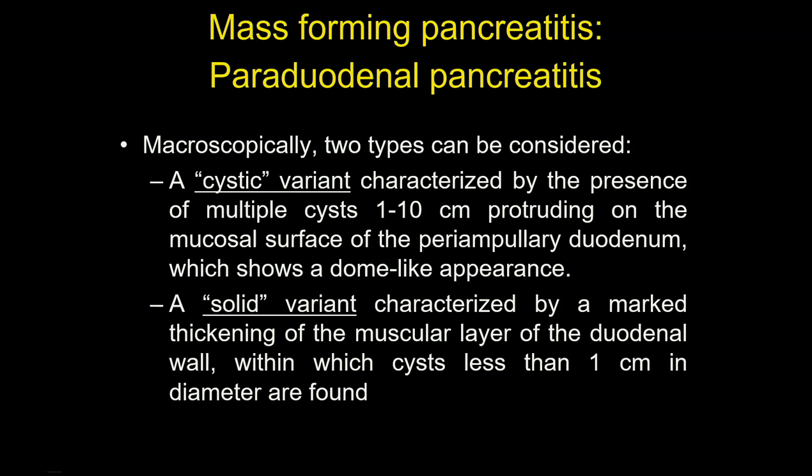The cysts are located between the duodenal lumen and the pancreatic head. The other variant is the so-called solid variant, in which cysts are most often small — a microcystic pattern not appreciable with imaging. There is a thickening of the muscular layer of the duodenum, and cysts are less than one centimeter.